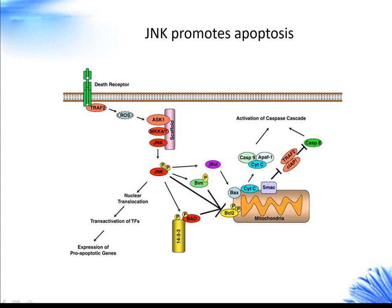In addition, by phosphorylating BAD and its sequestering partner 14-3-3, JNK can promote BAD-mediated neutralization of the BCL2 family of anti-apoptotic proteins. Finally, JNK can phosphorylate BCL2, suppressing its anti-apoptotic activity.